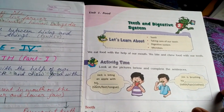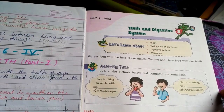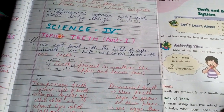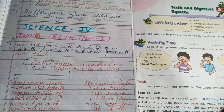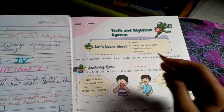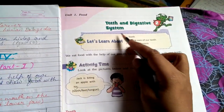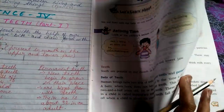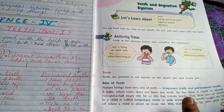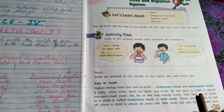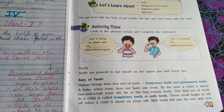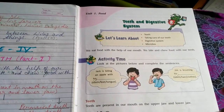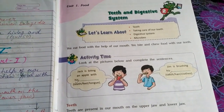Hello kids, welcome once again to your science classes of Grade 4. In this part of the video we are going to revise our Chapter 2, that was Teeth and Digestive System. I will revise the subtopics of this chapter, give you a quick recap, and then we will discuss the book exercises of this chapter.